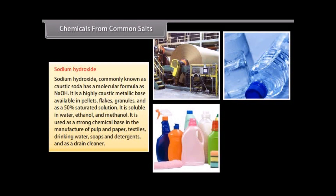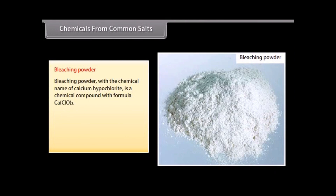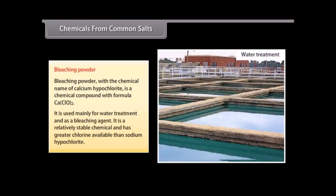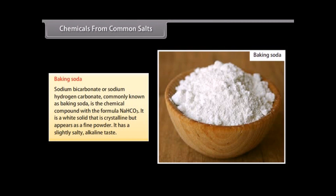Bleaching powder, with the chemical name calcium hypochlorite, has the formula Ca(ClO)2. It is used mainly for water treatment and as a bleaching agent. It is a relatively stable chemical with greater available chlorine than sodium hypochlorite. Baking soda, or sodium bicarbonate (sodium hydrogen carbonate), commonly known as baking soda, has the chemical formula NaHCO3. It is a white solid that is crystalline but appears as a fine powder, with a slightly salty alkaline taste.